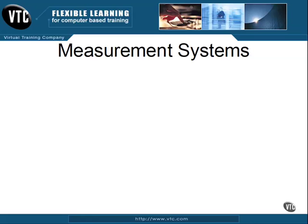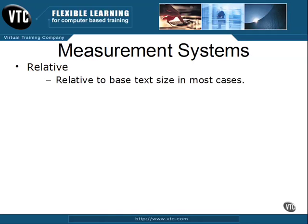In this movie we examine relative measurement systems. Generally, relative measurement systems are considered to be somewhat better than absolute systems because these systems allow more flexibility. As previously mentioned, the system standard of measurement can shift depending on values associated with other properties, and the actual determinant is the base text size in most cases.